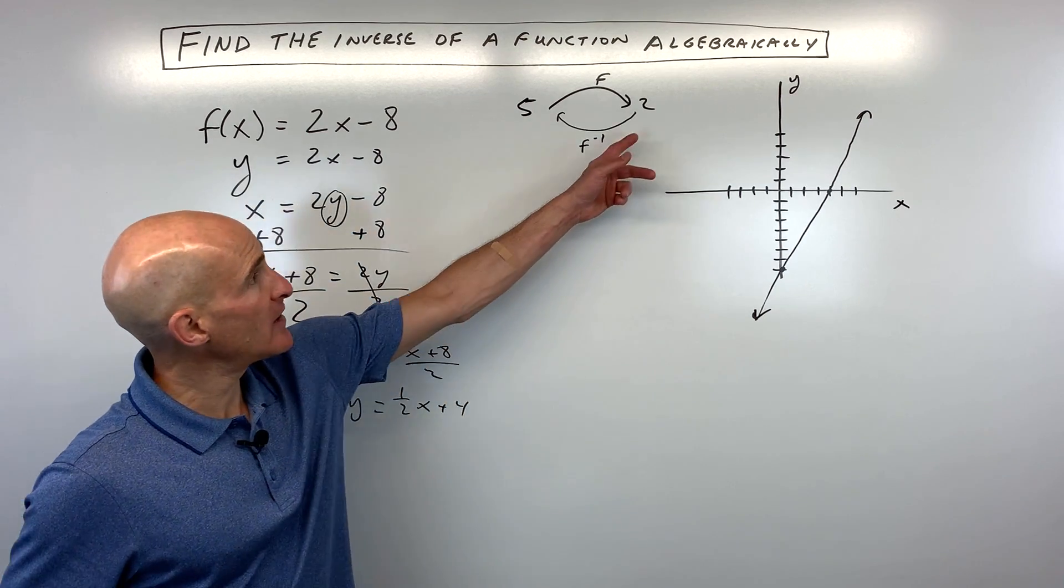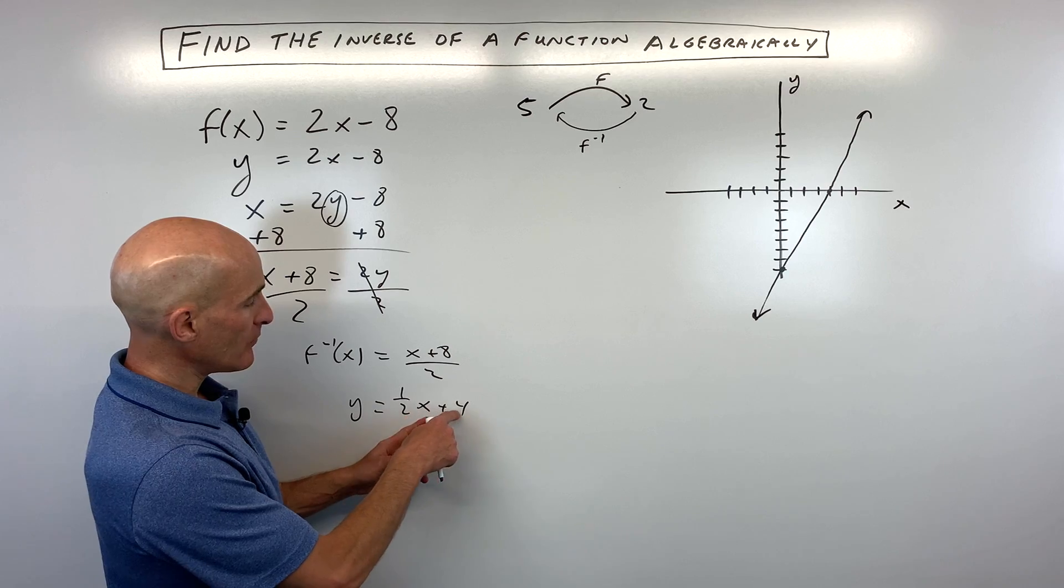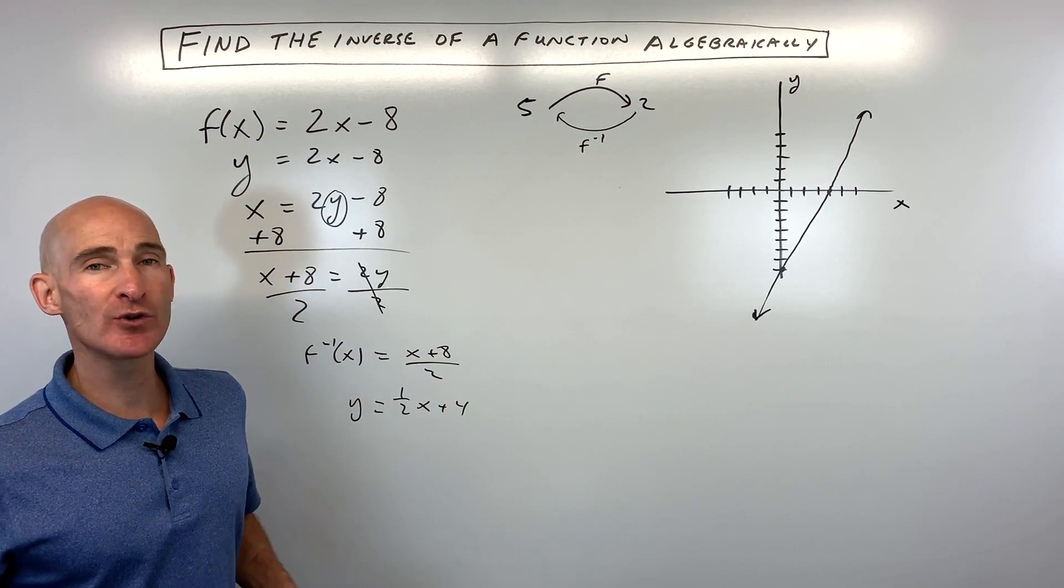Now let's test it out. So if we take 2 and we put it in for x, 1 half times 2 is 1 plus 4 is 5. See how it's undoing or reversing or the inverse of the original function?